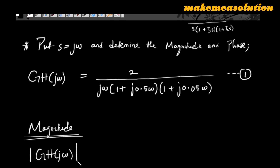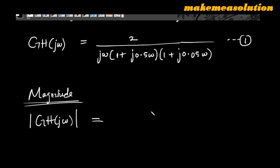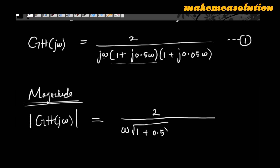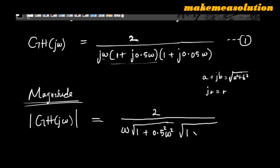To find the magnitude, |GH(jω)| equals 2 divided by: the magnitude of jω is just ω, the magnitude of (1 + j·0.5ω) is √(1 + 0.5²ω²), and the magnitude of (1 + j·0.05ω) is √(1 + 0.05²ω²). This uses the rule that the magnitude of (a + jb) is √(a² + b²). We call this magnitude equation two.